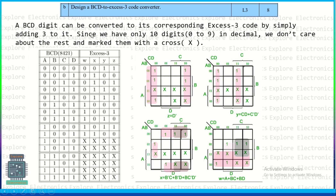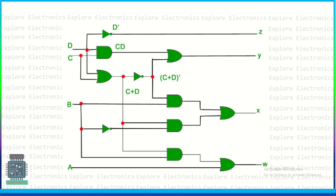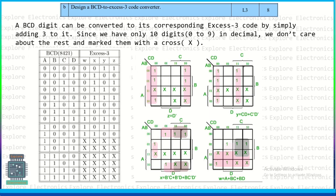The next question covers BCD to XS3 (Excess-3) code converter. BCD represents numbers 0 to 9 using 4 bits, and XS3 is obtained by adding 3 to each BCD value. Input combinations beyond 9 are taken as don't cares, which helps during K-map grouping. The K-maps, groupings, and expressions for each output bit are shown, along with the final circuit implementation.